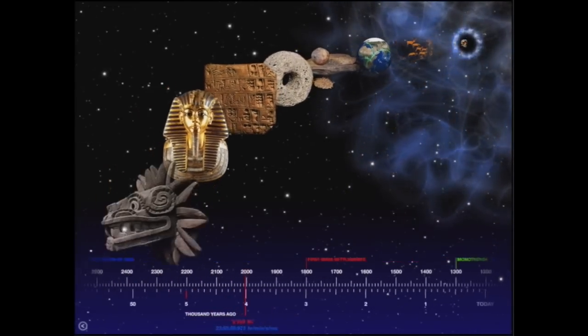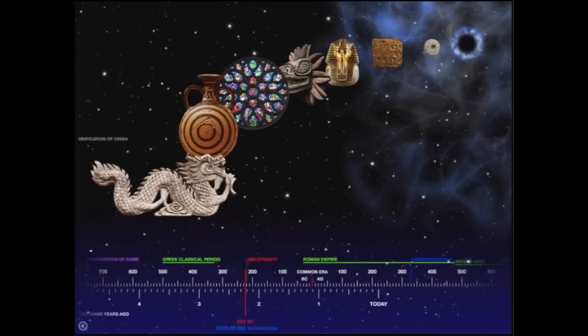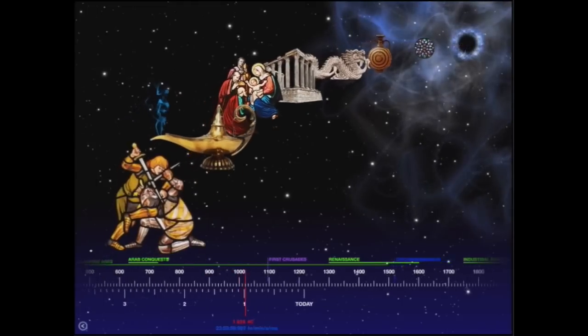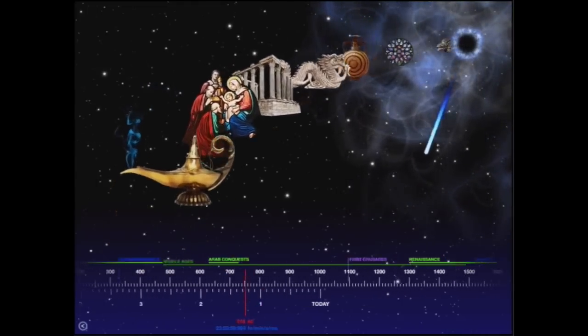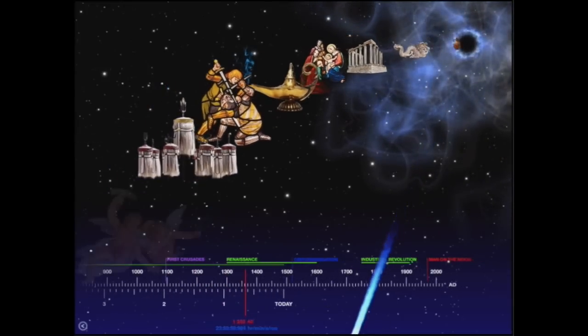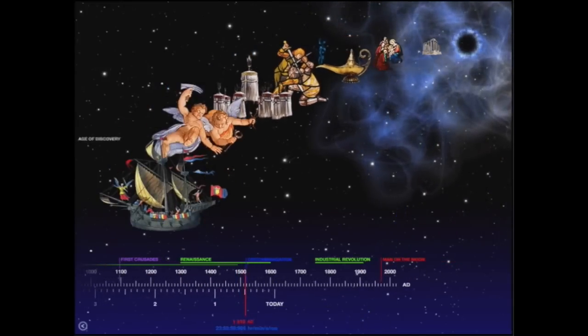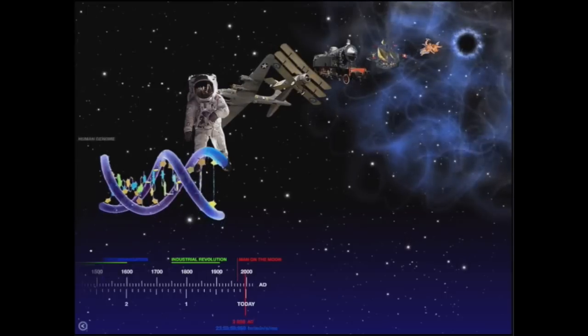The pyramids of Egypt, unification of China, the middle ages. What's the - oh, Arab conquests, Mongol Empire, the Renaissance, Age of Discovery, World War I and World War II, and the man on the moon.